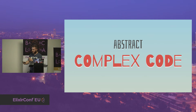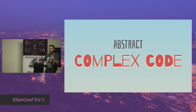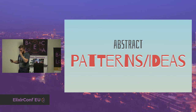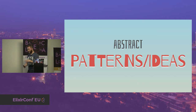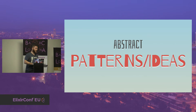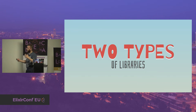Then there's another kind of library: libraries that abstract patterns and ideas. When you write software and start recognizing problems and thinking about ideas on how to solve them, you can abstract those ideas and build libraries that guide you to solve a problem — they tell you how to solve it, they shape the way you solve the problem. So the two types are: abstracting complex code, and abstracting ideas and patterns.